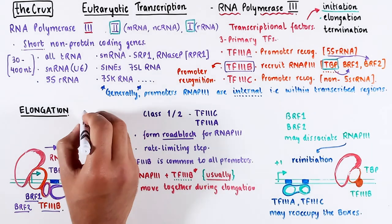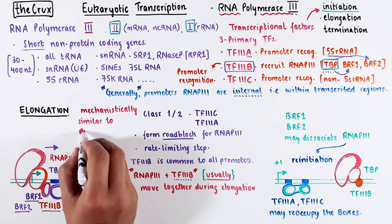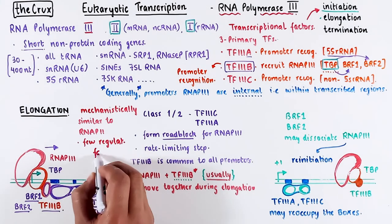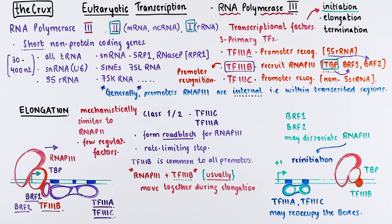Regarding the elongation mechanism at a structural level, it is similar to what we have discussed in polymerase 2, but with fewer regulators involved. Transcripts are often short, so polymerase 3 doesn't spend much time on the DNA per transcription cycle. This possibly may explain the reduced need for regulators. And this concludes our discussion on elongation.